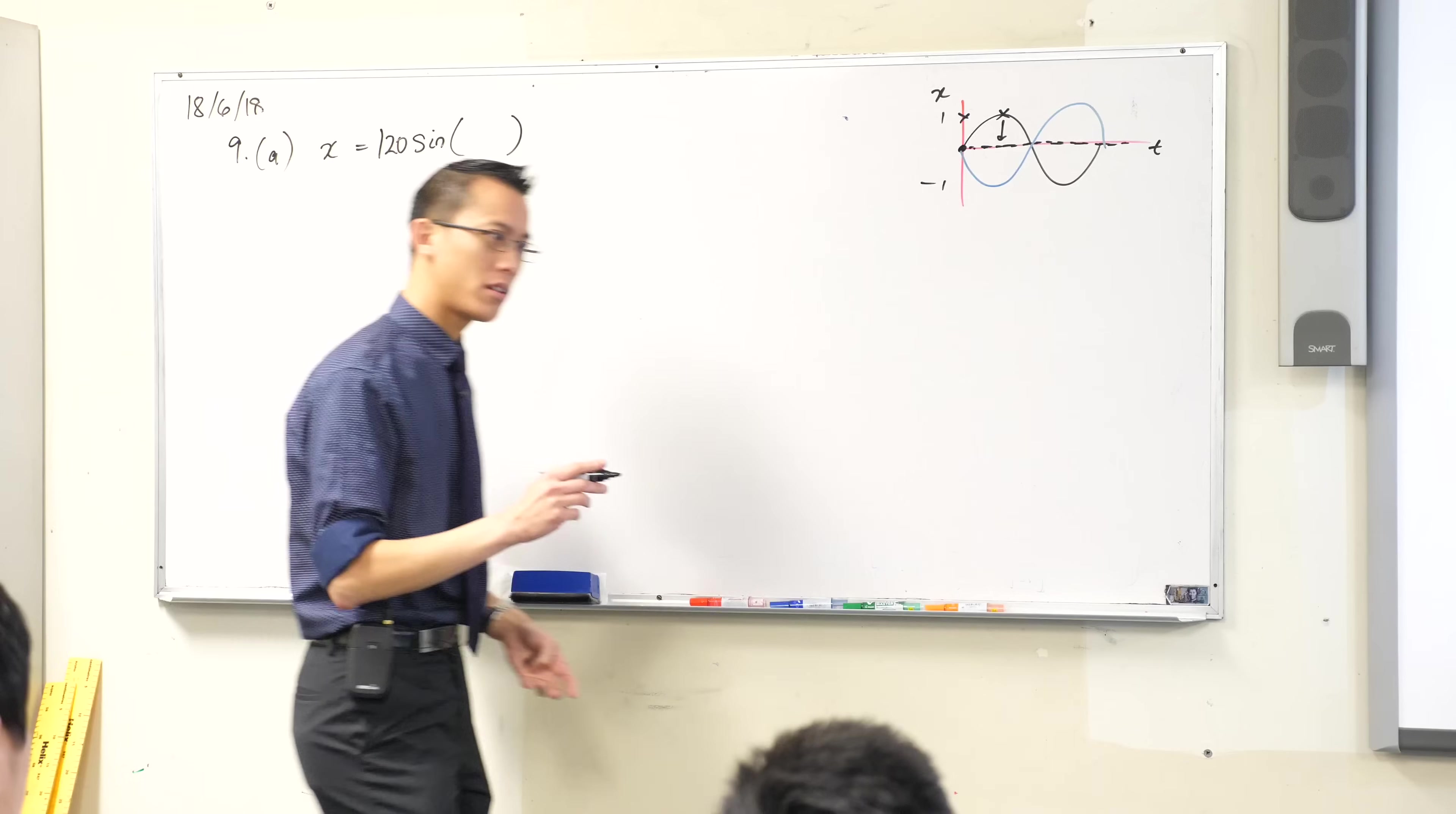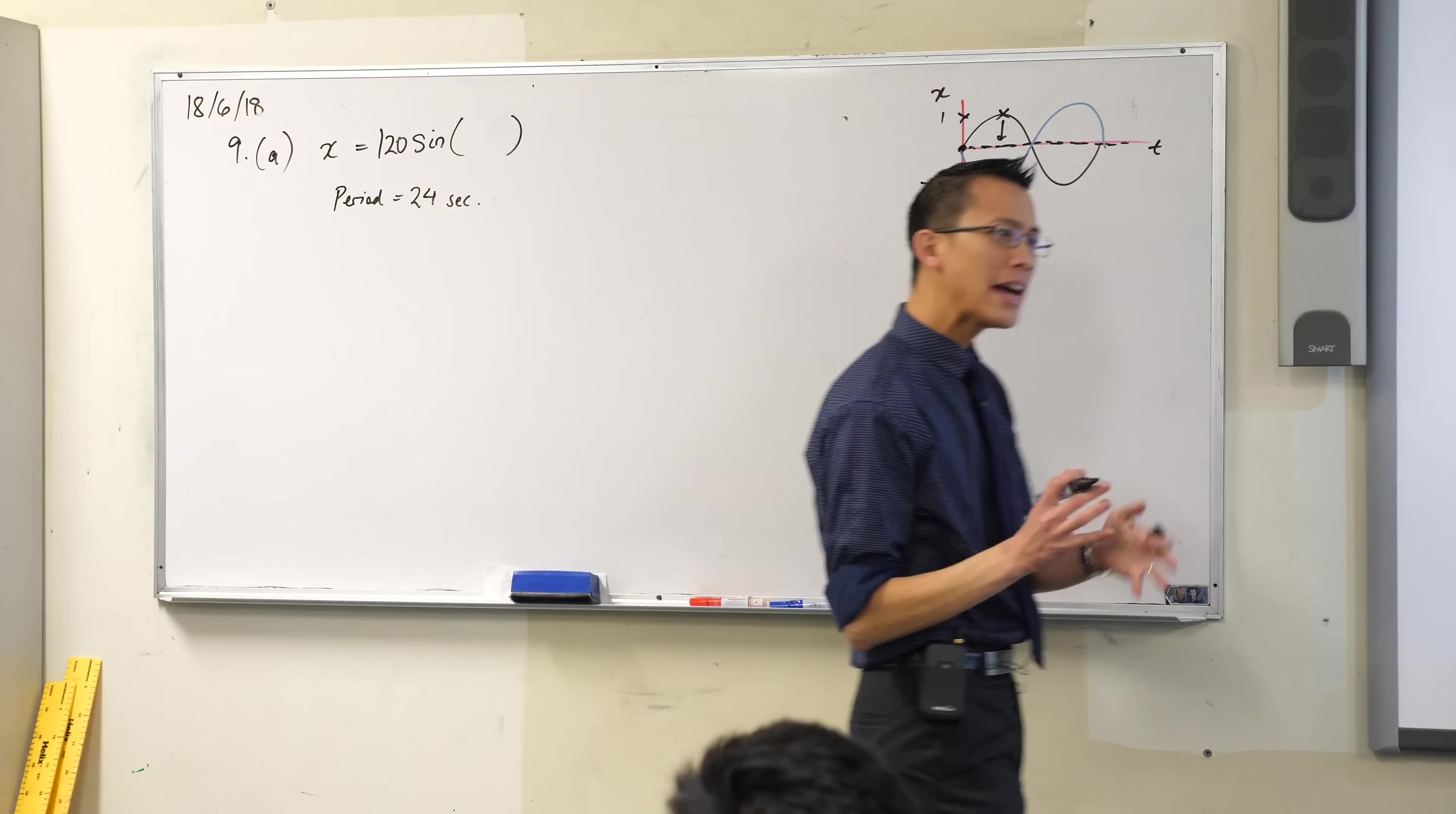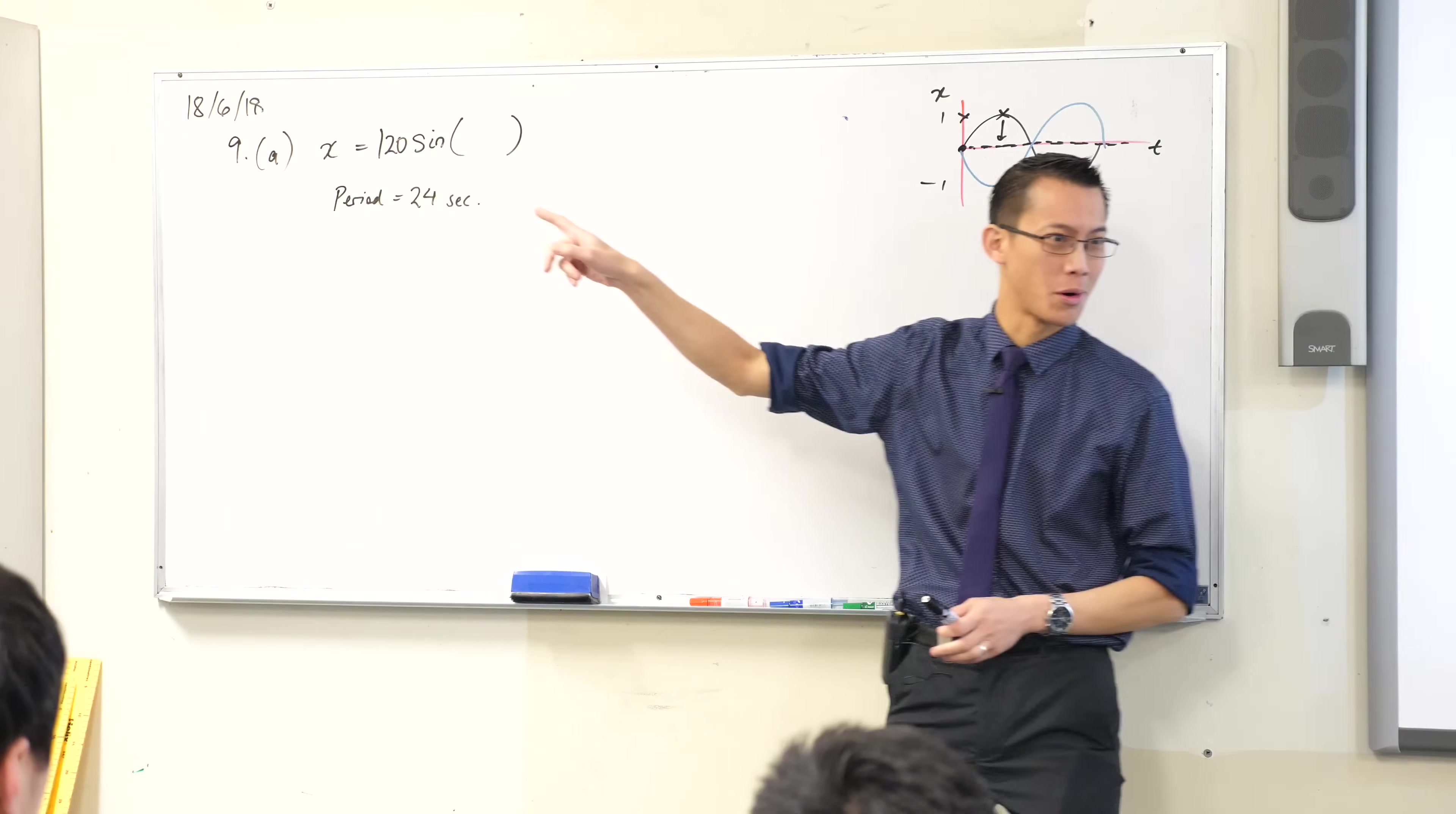And then the next piece of information which they give us, the numerical data or the previous rather, is that the period is 24 seconds. The period is 24 seconds, that's worth writing down. Period equals 24 seconds. Now if that's the case, that's also going to fiddle with our numbers. Which number before we work out what it is, which number is it fiddling with?